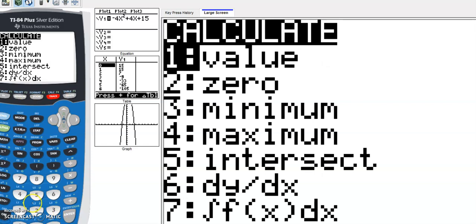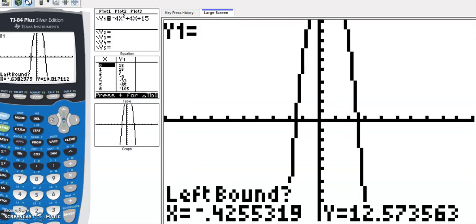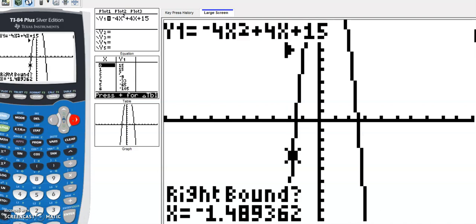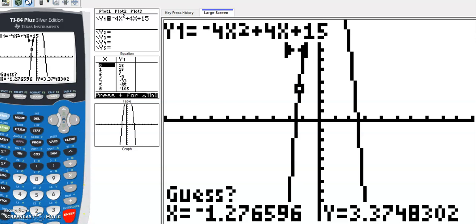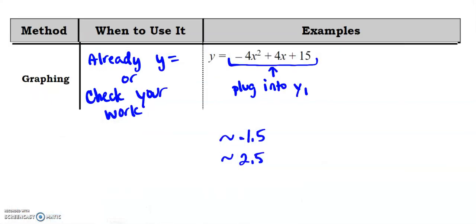And then you can do the same thing for the other value. So I'm going to go left of it. And then my cursor, I'm going to make it jump a little bit farther to the right. And then it looks like it's at negative 1.5. Okay.